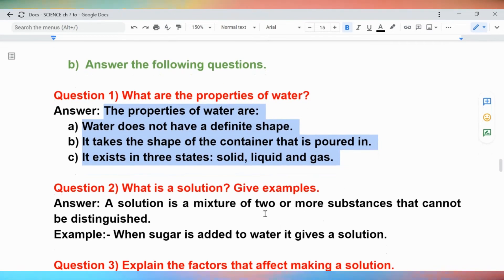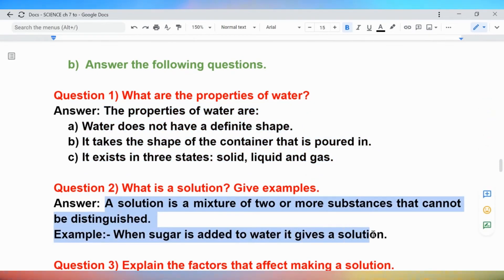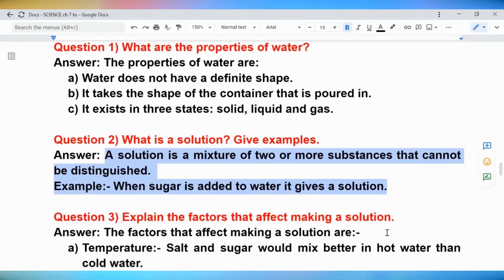Question 2: What is a solution? Give examples. Answer: A solution is a mixture of two or more substances that cannot be distinguished. Example: When sugar is added to water it gives a solution.